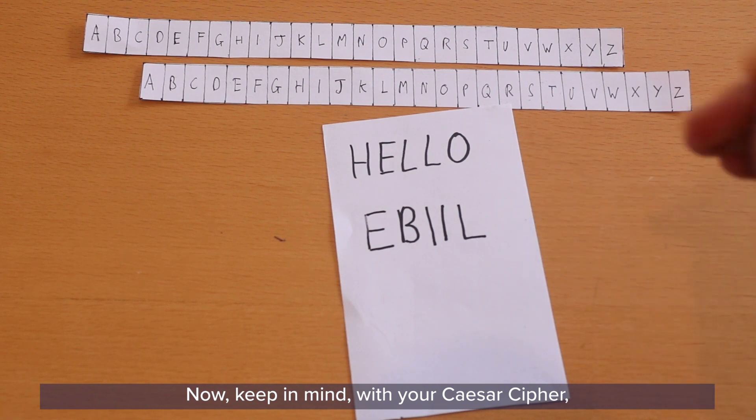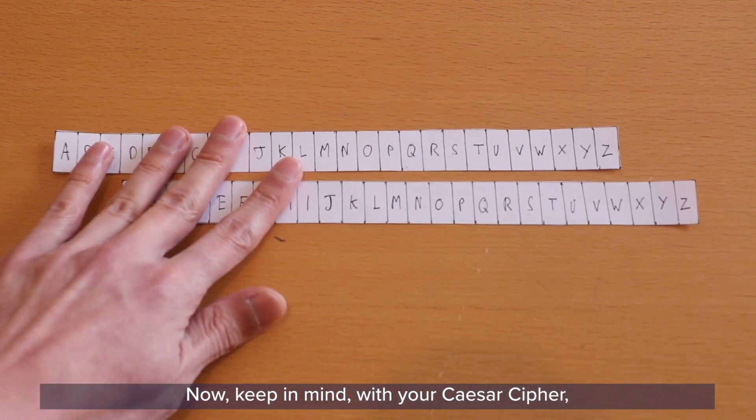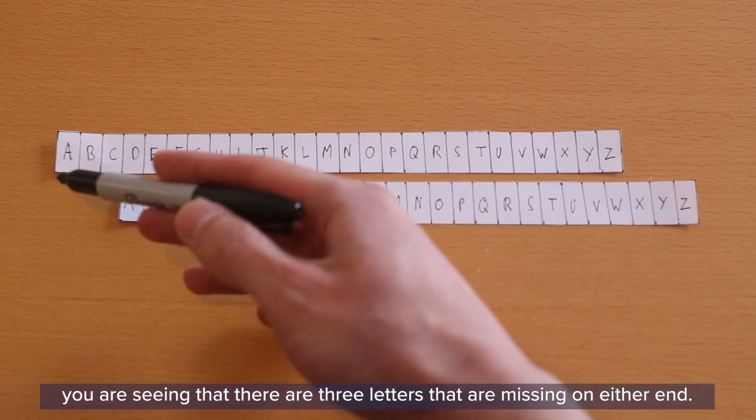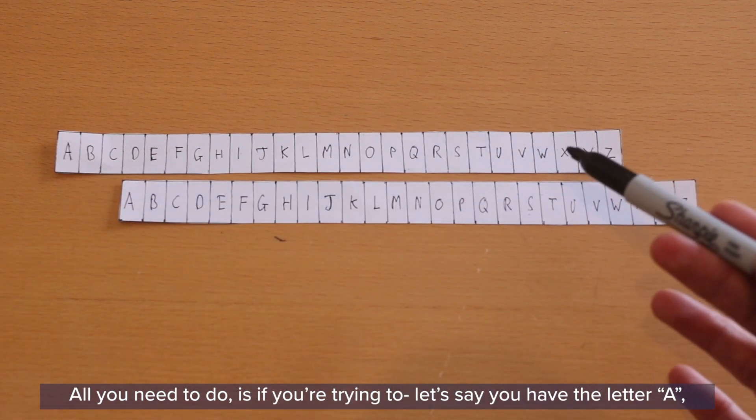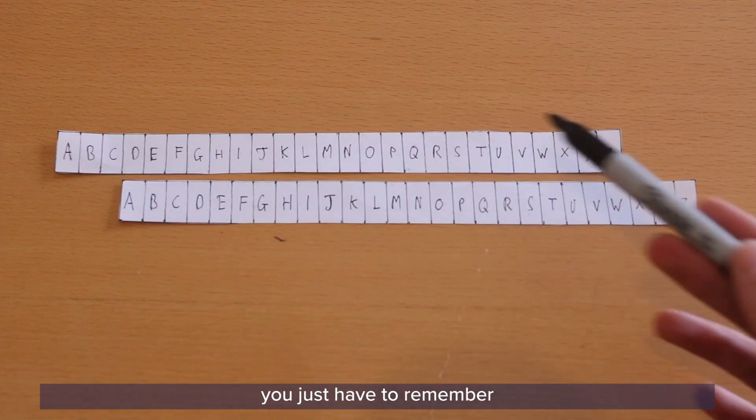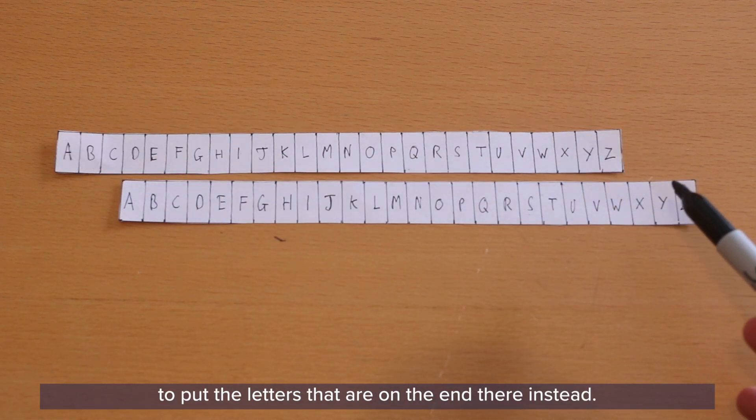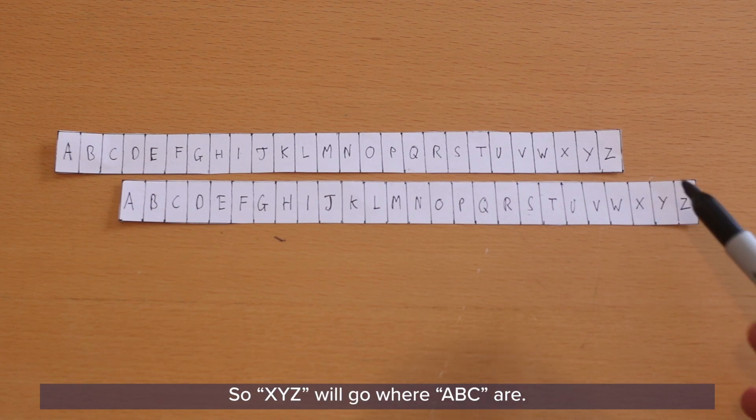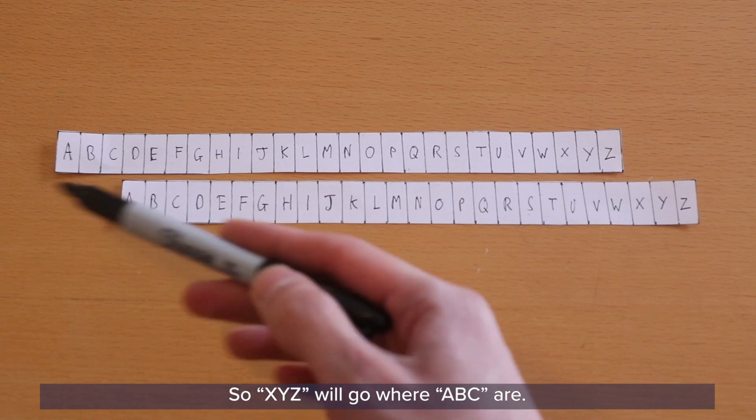Now keep in mind with your Caesar cipher you are seeing that there are three letters that are missing on either end. All you need to do is if you're trying to, let's say you have a letter A, you just have to remember to put the letters that are on the end there instead. So X, Y, Z will go where A, B, C are.